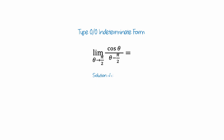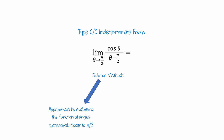There are two typical methods for computing the value of this limit. One option is to approximate it by evaluating the function at angles successively closer to pi over 2. This method produces estimates, which might be very good, but it could take a lot of computation, and sometimes these estimates are inaccurate. The alternative is a formulaic method called L'Hôpital's rule, which I'll describe in detail.